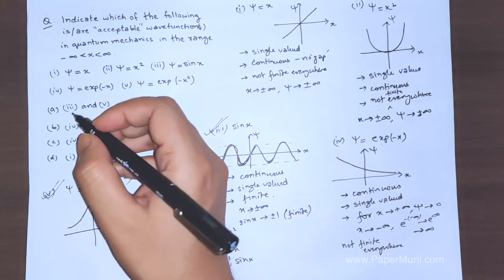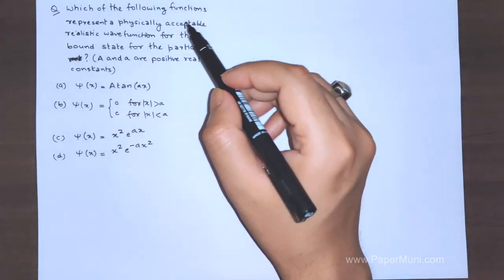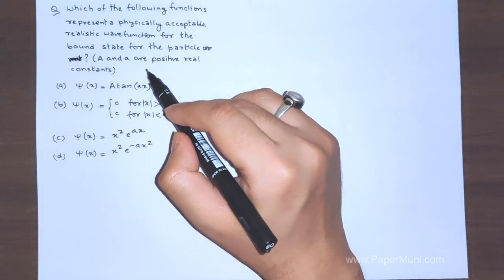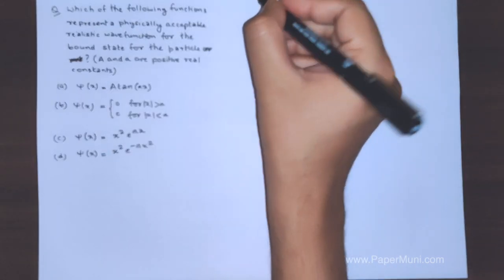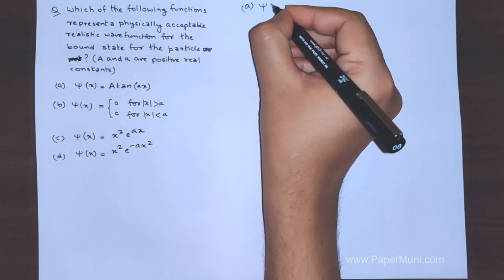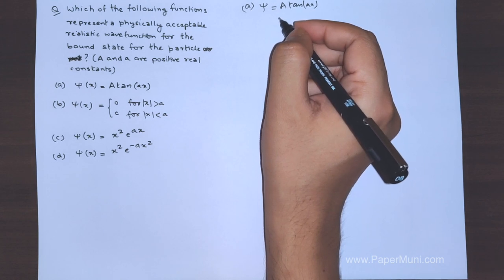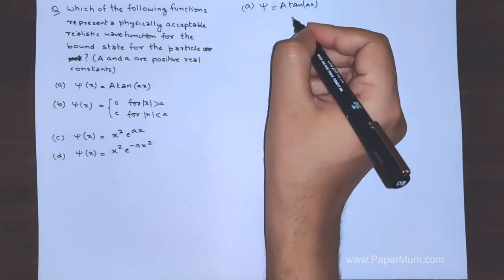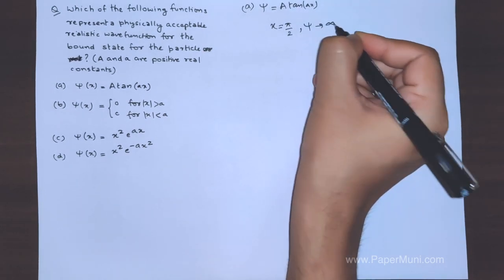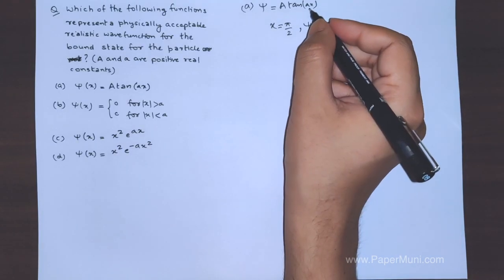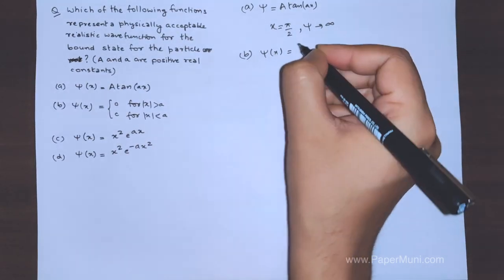The next question asks which function represents a physically acceptable realistic wave function for a bound state of a particle, where A and a are positive real constants. Let's go through each option. For tan x: if you put x equal to π/2, ψ becomes infinite — it diverges. So this cannot be a physically acceptable wave function.